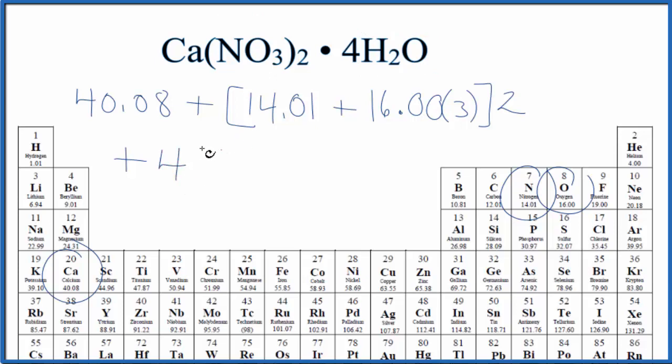So four, let's use brackets. Hydrogen is 1.01 and we have two of them, so we'll multiply that by 2 plus 16.00. Let's put our brackets back.